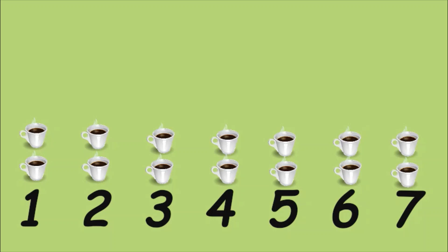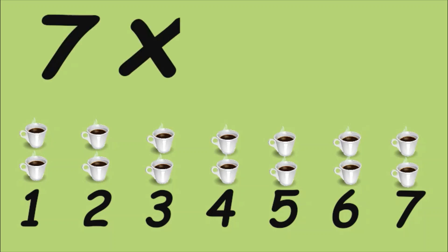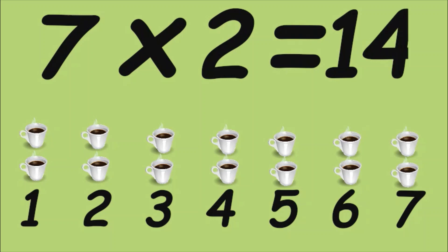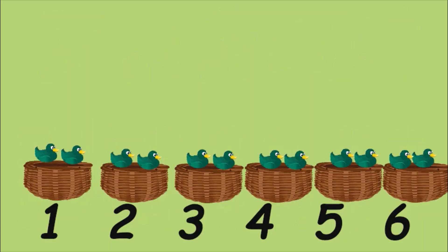There are seven rows and in each row there are two cups, so we write seven times two. And the answer is fourteen.